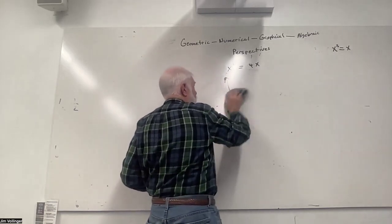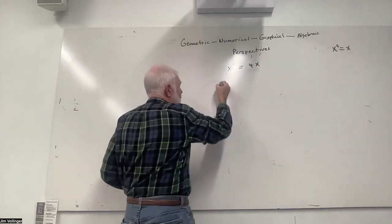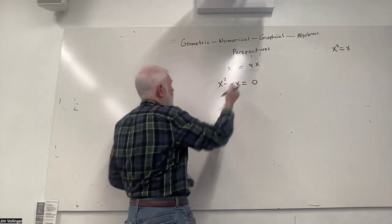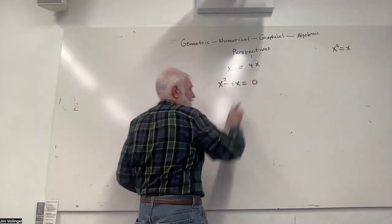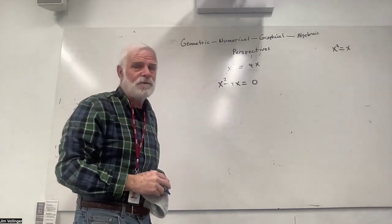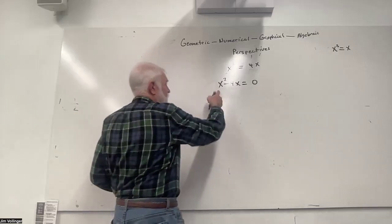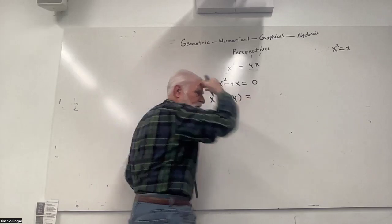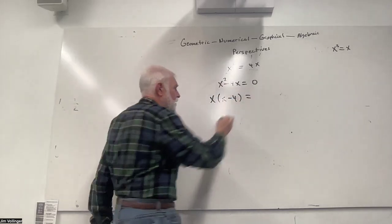For the algebraic perspective, when you solve an equation you've got to get your variables together. The only way to do that is to swing 4x to the other side. Then anytime you've got an addition or subtraction statement equaling zero, it's a lot of fun if you can factor it — writing it as a product, taking out what is common.